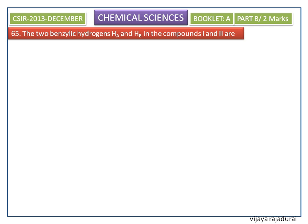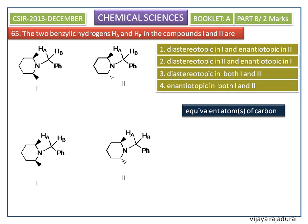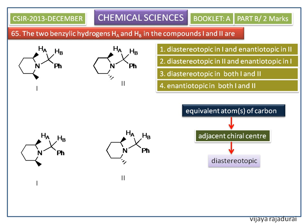The two benzylic hydrogens HA and HB in compounds 1 and 2 — the options are shown. In a crude method, equivalent atoms of carbon having an adjacent chiral center are said to be diastereotopic. Considering the carbon in structure 2, it has two adjacent atoms: nitrogen and carbon. The substituents of the nitrogen are opposite to each other, so it will not have any symmetry. Here, nitrogen is considered a chiral center, so these two equivalent hydrogens are said to be diastereotopic.